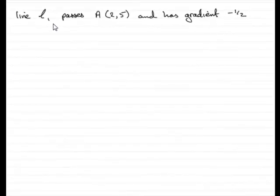Okay, so we're being asked to find the equation of the line L1 that passes through the point A with coordinates (2, 5) and has a gradient of minus a half. We're asked to put it in the form y = mx + c.